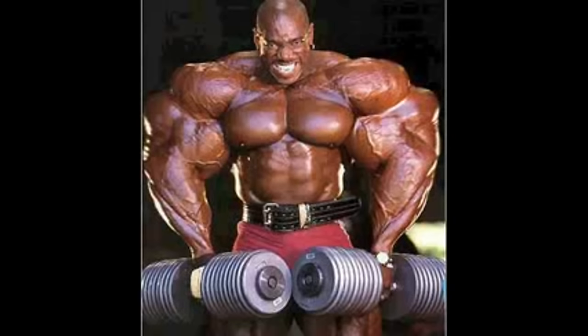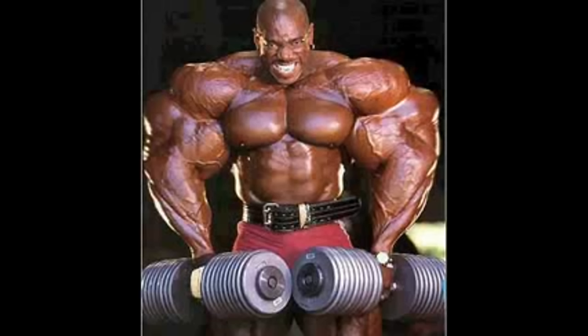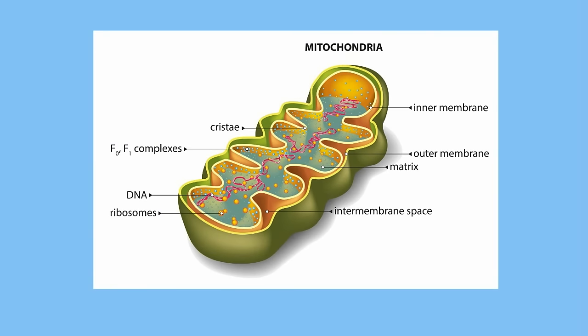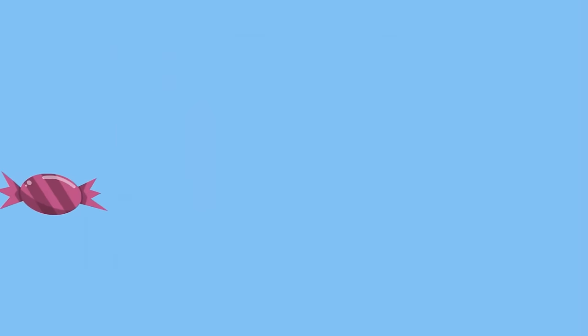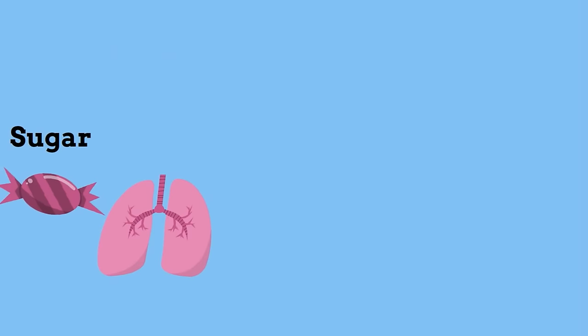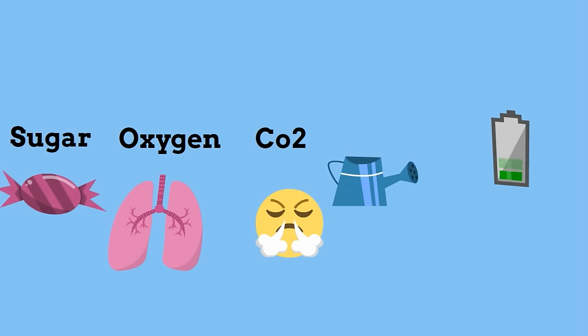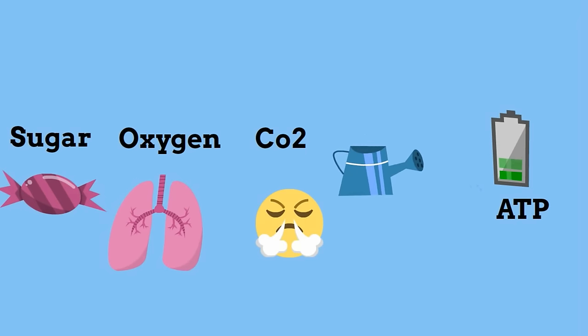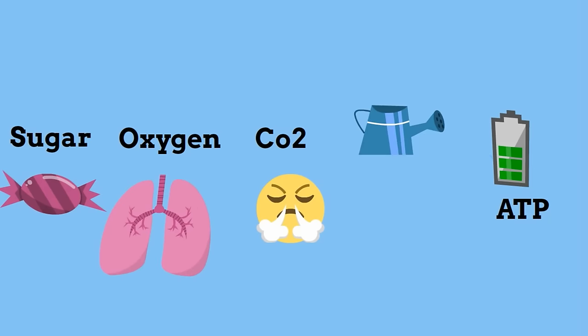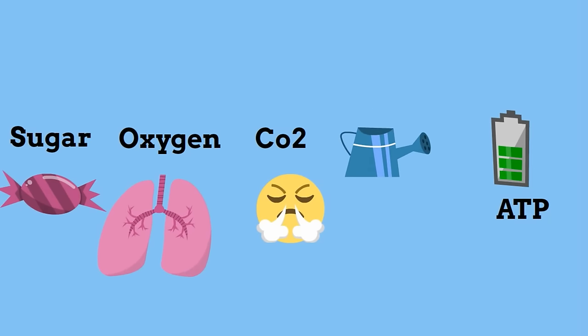Cells that need more energy have more mitochondria, like muscles. At the mitochondria, the sugar combines with oxygen to produce carbon dioxide plus water and energy in the form of ATP. This process of cellular respiration generates energy to help keep living organisms alive.